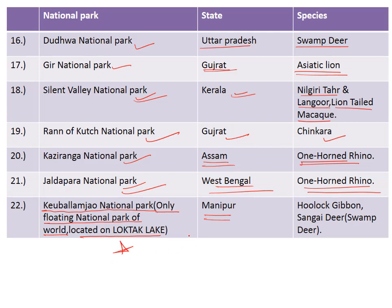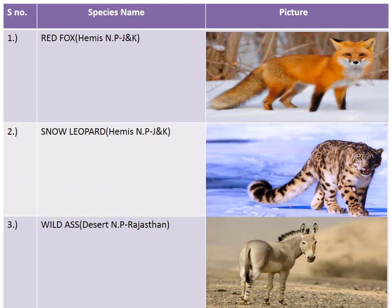For the past three years, UPSC has asked questions about which state the floating national park is situated in. In the Coal India exam, questions associated with this park were also asked. Keibul Lamjao National Park is famous for the hollock gibbon — a species belonging to the family of apes — and also for the sangai deer.